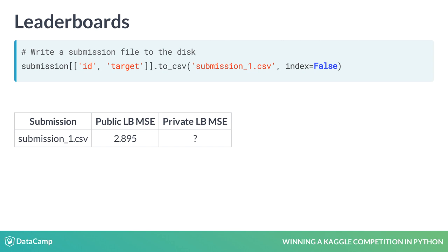So, we see the standings on the so-called public leaderboard, denoted as LB. On the other hand, the private leaderboard score is unknown until the competition deadline. For example, if we have submitted a file called submission1.csv and the competition metric is mean squared error, then we will know the result only on the public leaderboard.